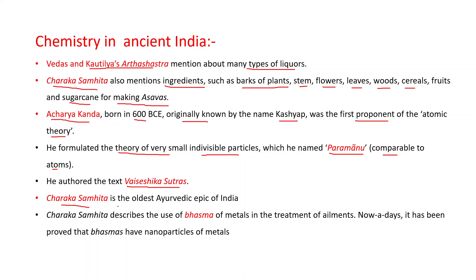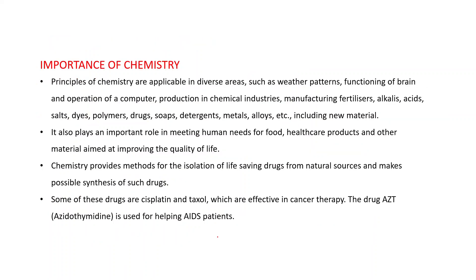Charak Samhita is the oldest Ayurvedic epic of India. It describes the use of bhasma — bhasma of metals — in the treatment of ailments. Nowadays it has been proved that bhasma contain nanoparticles of metals. This concludes the section on ancient India and chemistry.